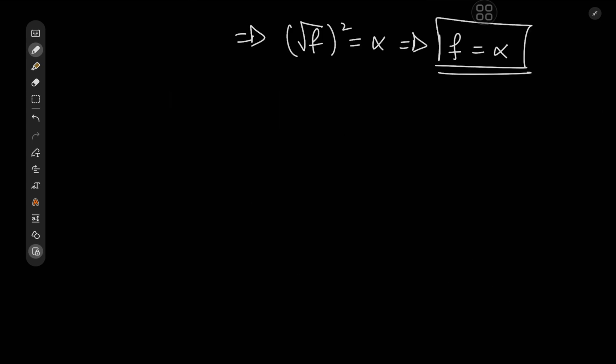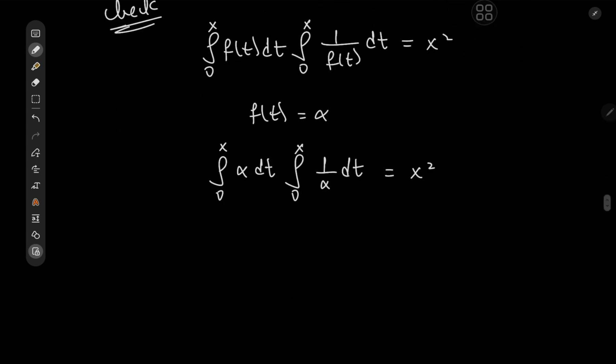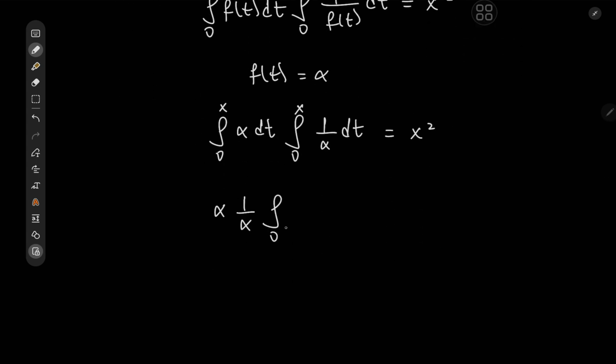And we'd like to perform a quick check to verify that our function does indeed satisfy the given integral equation. So we have integral 0 to x of f(t) dt times integral 0 to x of 1 over f(t) dt equal to x squared. Plugging in f(t) equal to alpha, we have integral 0 to x of alpha dt times the integral from 0 to x of 1 over alpha dt equal to x squared. And that means we have alpha times 1 over alpha times the integral from 0 to x of dt times again the integral from 0 to x of dt equal to x squared, which is indeed the case.